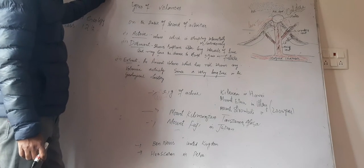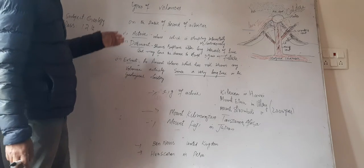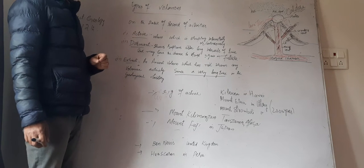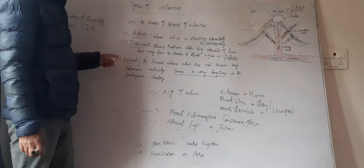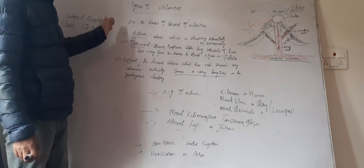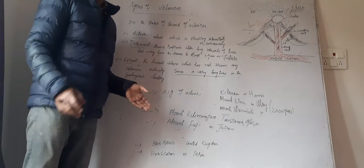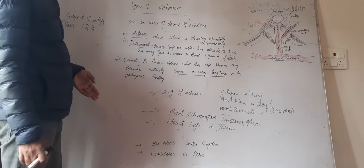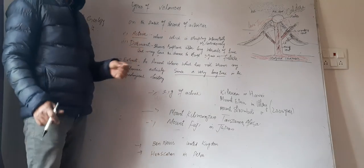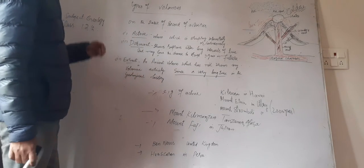There are three types of volcanoes which have been recorded as per their activities: number one, active volcano; number two, dormant volcano; and number third is extinct. So volcanoes are divided into three types on the basis of their activities. What is an active volcano? An active volcano is a volcano which is erupting intermittently or continuously.